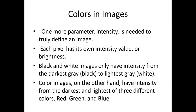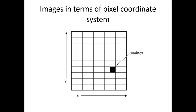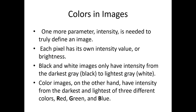One more important thing about digital images: colored images. A pixel not only contains its position (x and y coordinates) but also an intensity value. Intensity tells you how bright or dark the image is. You can see different shades of gray — pure white, gray, and completely black — representing different intensity levels.